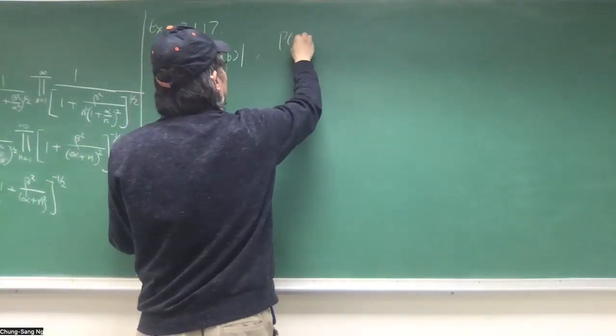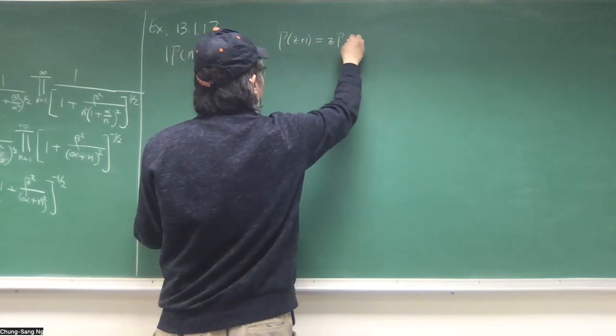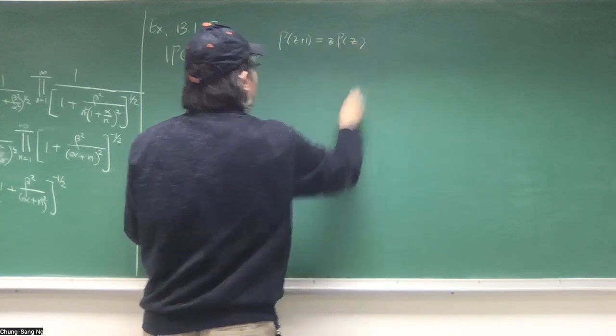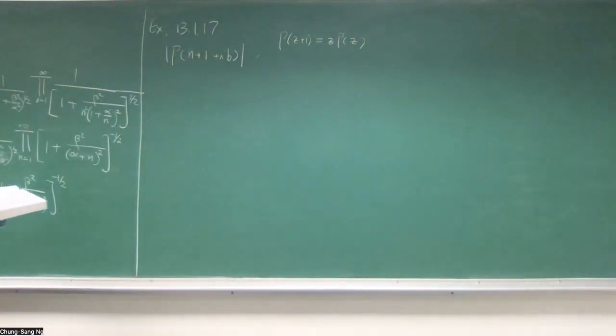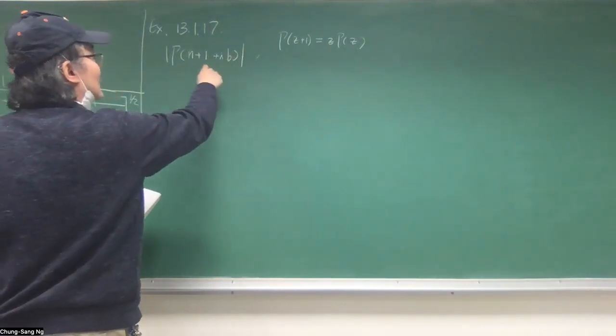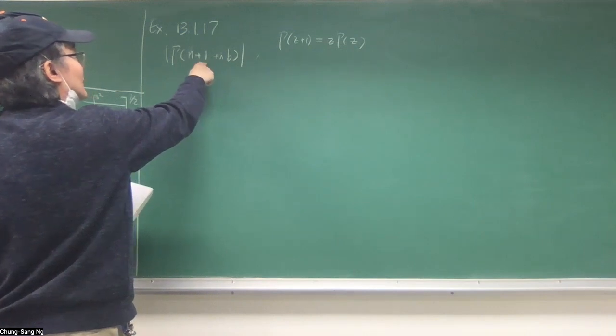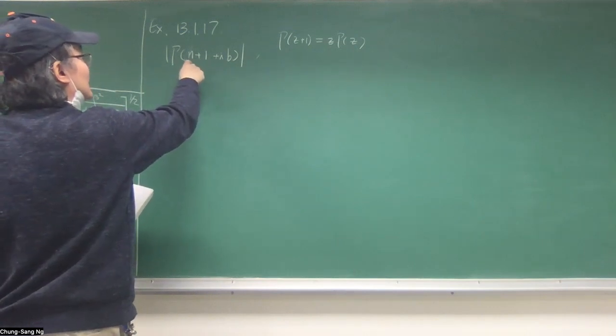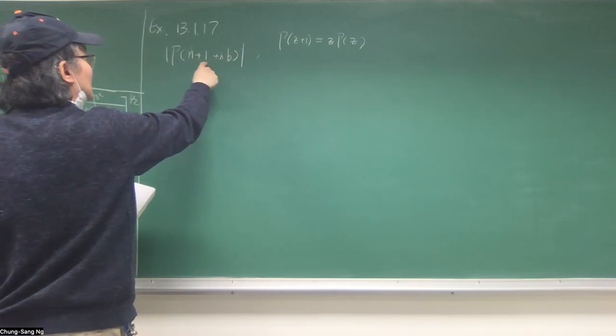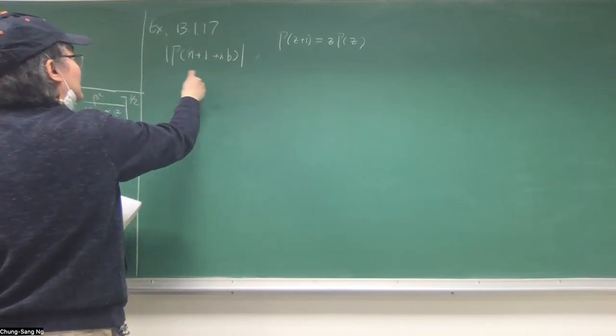So gamma Z plus 1 equals Z times gamma Z. In this case, we want to use that, we want to reduce this one, so there's a one here. So Z becomes N plus IB in this one. Without taking the absolute value first, just consider the gamma functions.